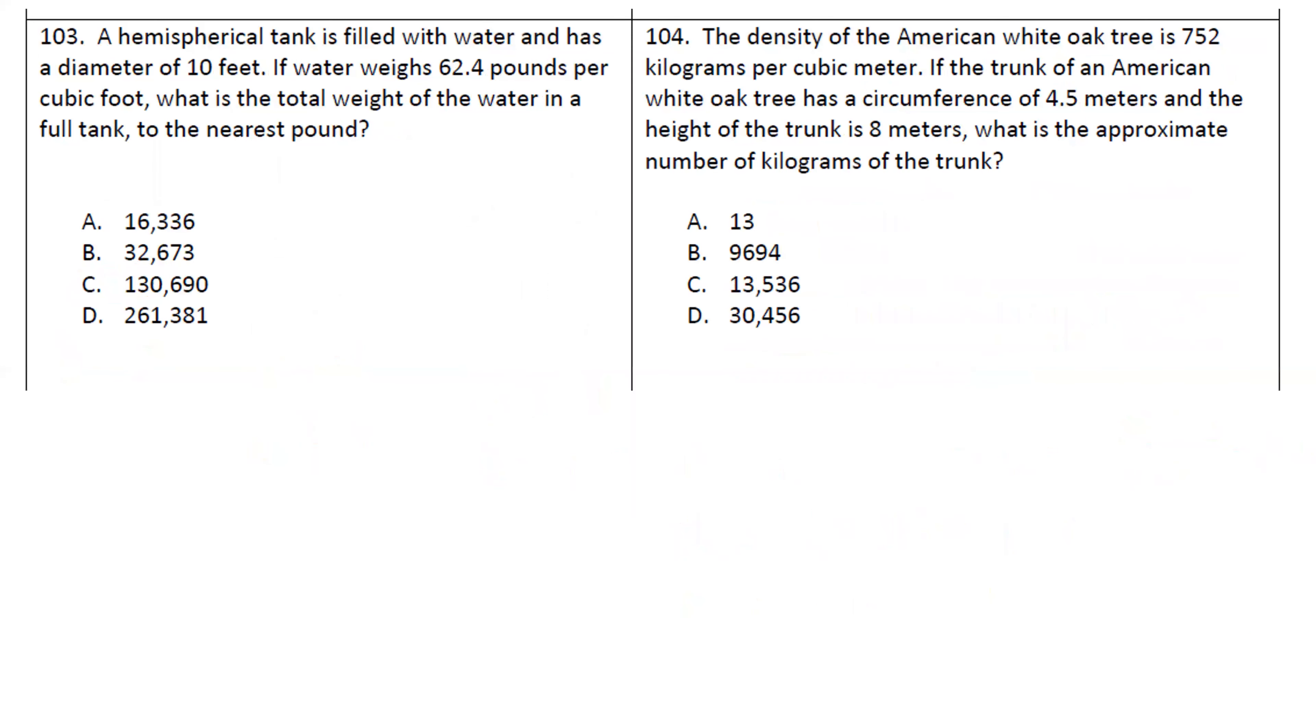103. A hemispherical tank filled with water has a diameter of 10 feet. The water weighs 62.4 pounds per cubic foot. What is the total weight of the water in a full tank to the nearest pound? So first volume, four thirds pi r cubed. This is the volume for a sphere. So to make it for a hemisphere, what do I have to change? Four thirds has to become two thirds. They gave us a diameter of 10 feet. So our radius is 5. So we got two thirds pi 5 cubed. That gives us 261.8.